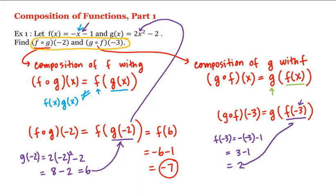This is what we plug in and evaluate g at. That is, this is equal to g of 2. Looking back at g, we plug 2 in: this is equal to 2 times 2 squared minus 2, or 2 times 4, which is 8, minus 2, which is 6. So this is our other value.